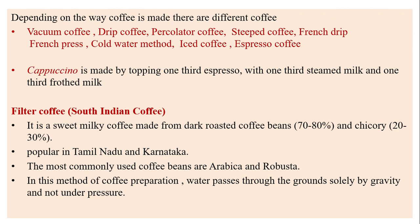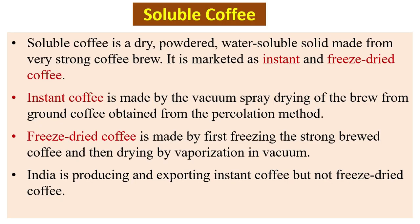Soluble coffee is a bright powdered water-soluble solid made from very strong coffee brew, marketed as instant and freeze-dried coffee. Instant coffee is made by vacuum spray-drying the brew from ground coffee obtained from the percolation method. Freeze-dried coffee is made by first freezing the strong brewed coffee and then drying by vaporization in vacuum. India produces and exports instant coffee but not freeze-dried coffee.